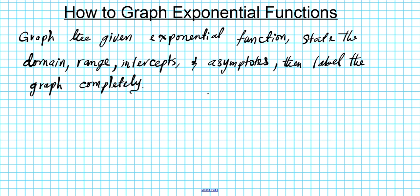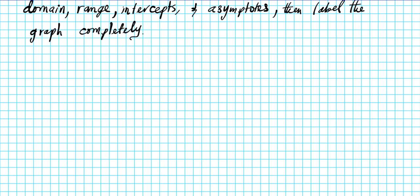Let's go ahead and start. The function under consideration is y equals 2 to the x. So why is this an exponential function? It's an exponential function because we have a number raised to a variable exponent. If you have any real number raised to a variable exponent, that is an exponential term. So we have y equals that term, which gives us an exponential function.